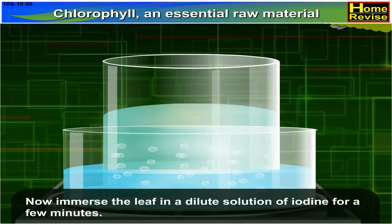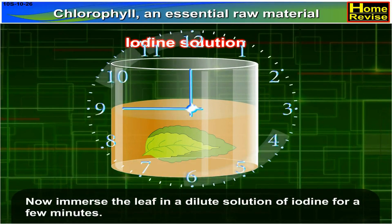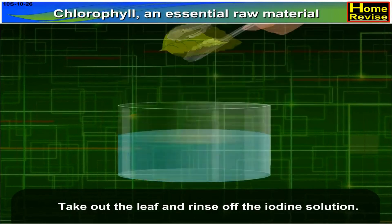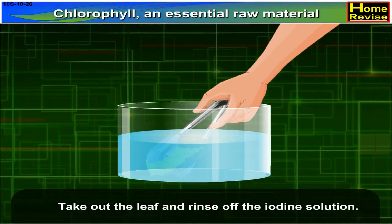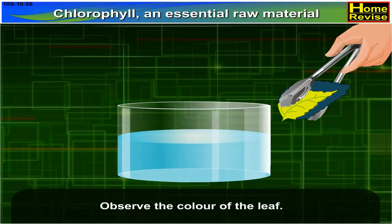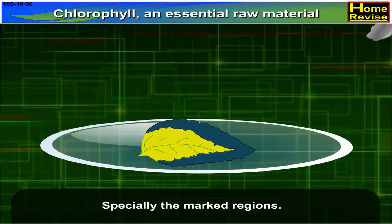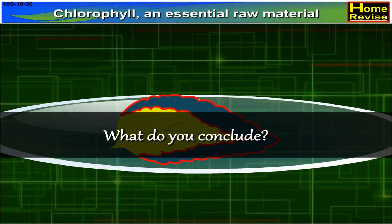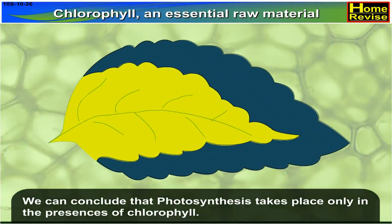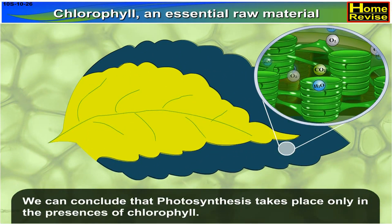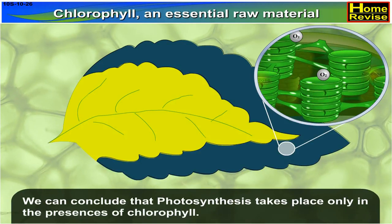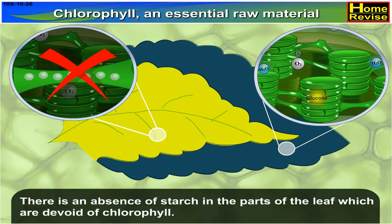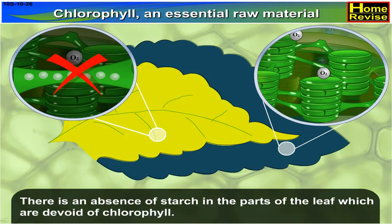Now, immerse the leaf in a dilute solution of iodine for a few minutes. Take out the leaf and rinse off the iodine solution. Observe the color of the leaf, especially the marked regions. What do you conclude? We can conclude that photosynthesis takes place only in the presence of chlorophyll. There is an absence of starch in the parts of the leaf which are devoid of chlorophyll.